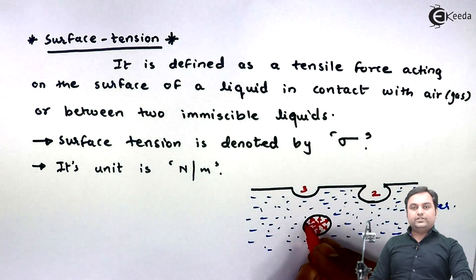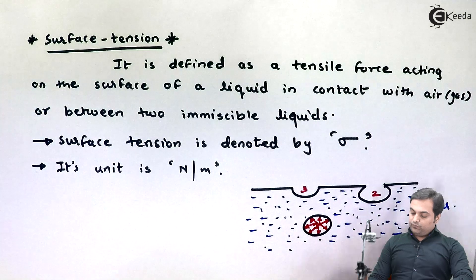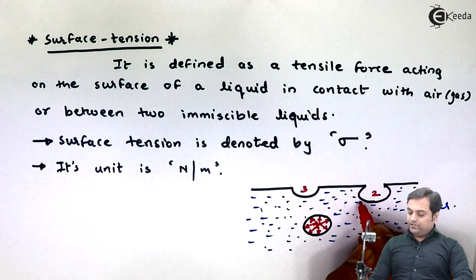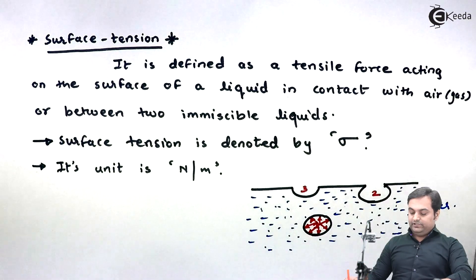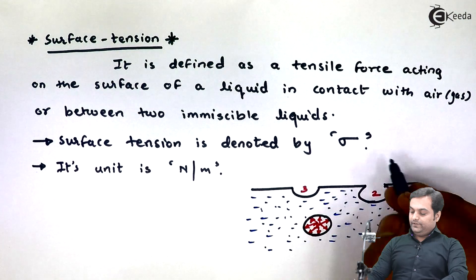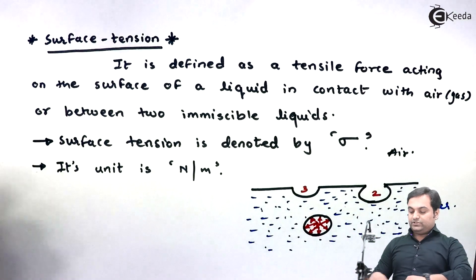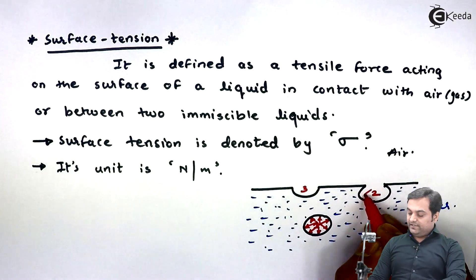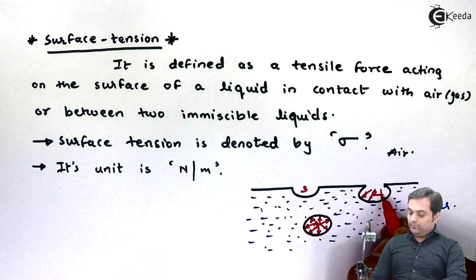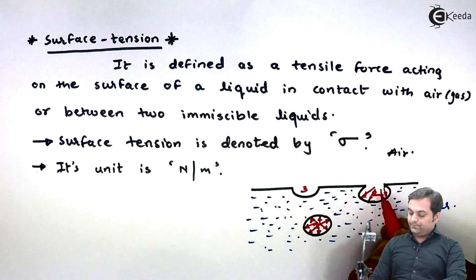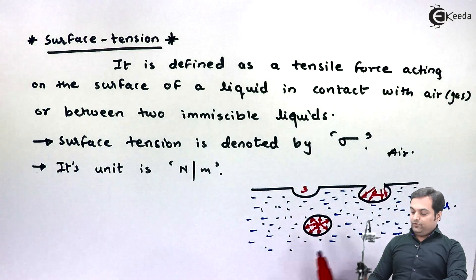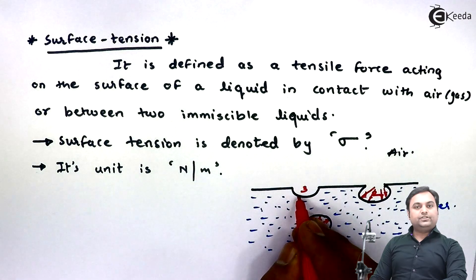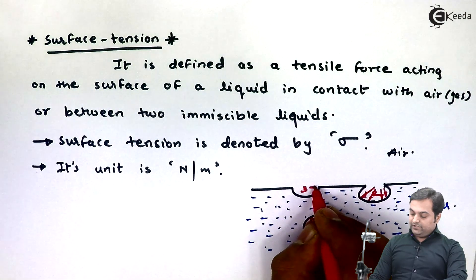Now consider molecule two. Since it is not completely immersed in water, some portion of it is in contact with the air above. So the forces acting on it try to pull the molecule in the downward direction towards the water. Because of that, there is a resultant downward force acting on molecule two.